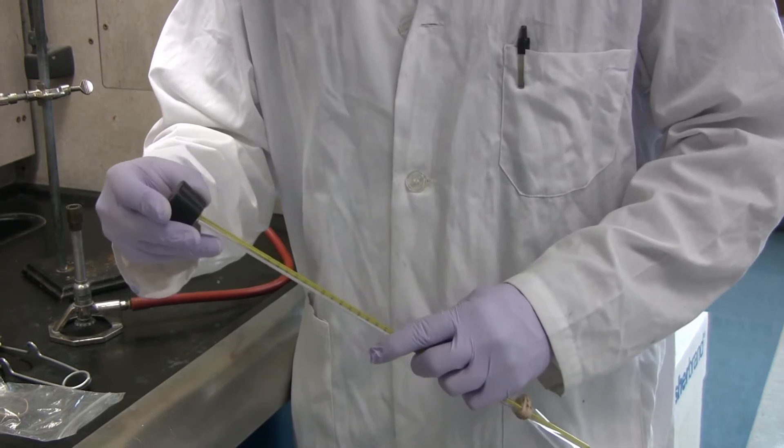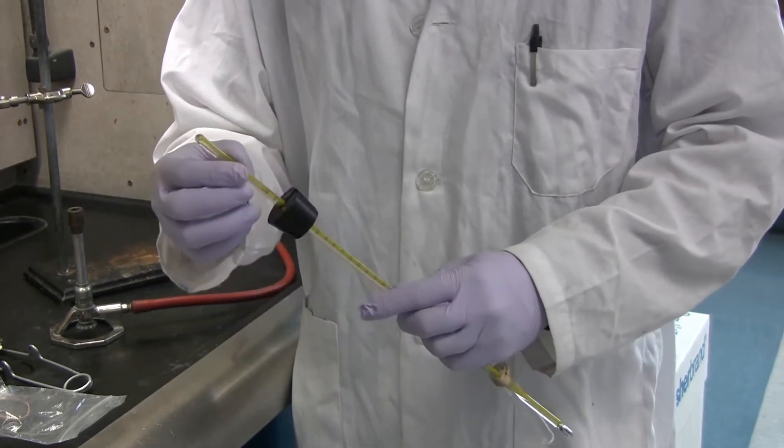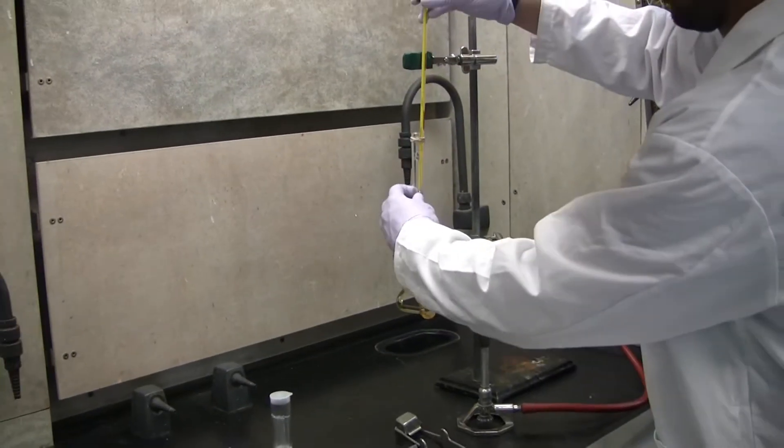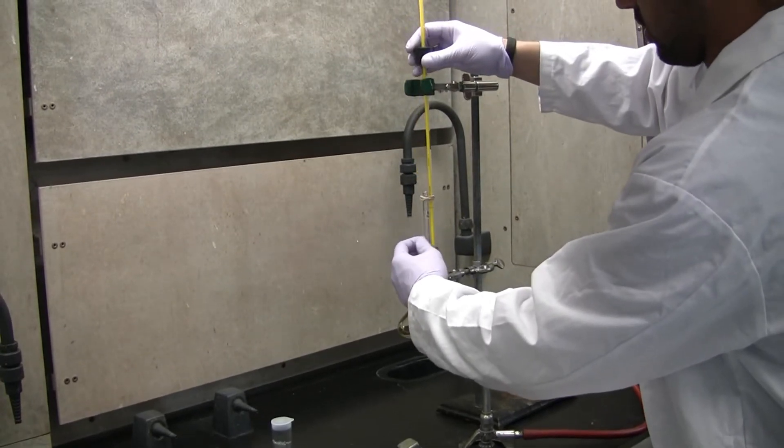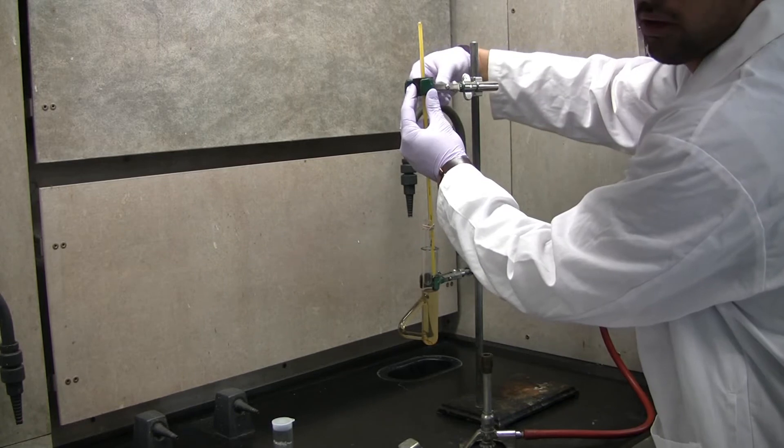Now, place the rubber stopper on top of the mercury thermometer. Place the rubber stopper into the clamp. Make sure it is securely fastened.